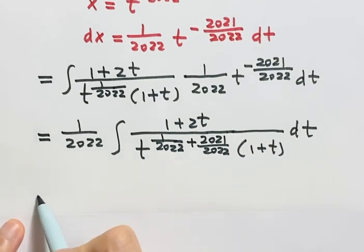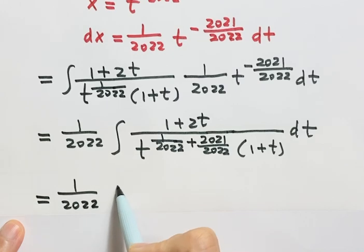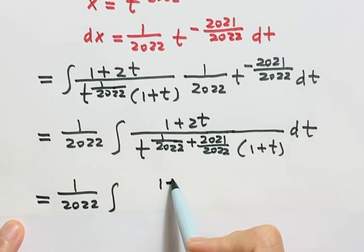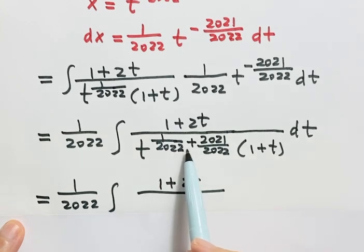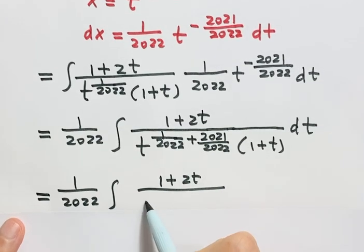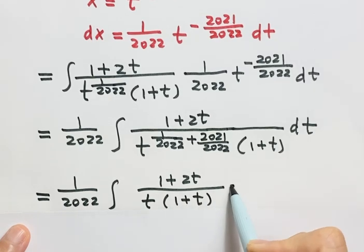Let's continue simplifying. On top, just 1 plus 2t. On the bottom, the two exponents add to 1, so we just have t to the power 1, which is just t. Then times 1 plus t, then dt.